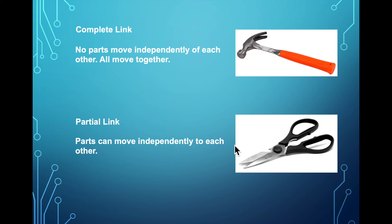But in a partial link, such as a pair of scissors, well, this one blade moves independently from the other blade, okay? So the parts can move independently. This is called partial. If everything moves as a block, as a whole, then it's called complete.